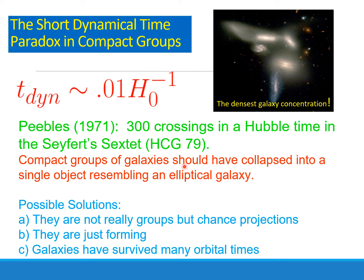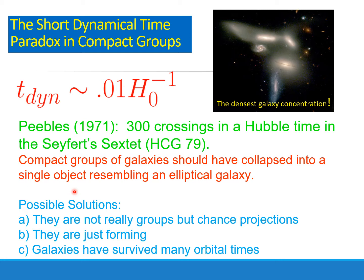Because we still see the galaxies there, this is what we call the paradox of the short dynamical time. Many solutions have been proposed. The most popular is that these are not really groups held by gravity — they are just chance projections. Another option is that these groups are experiencing the galaxies coming together for the first time. A third option is that the galaxies have survived many orbital times.